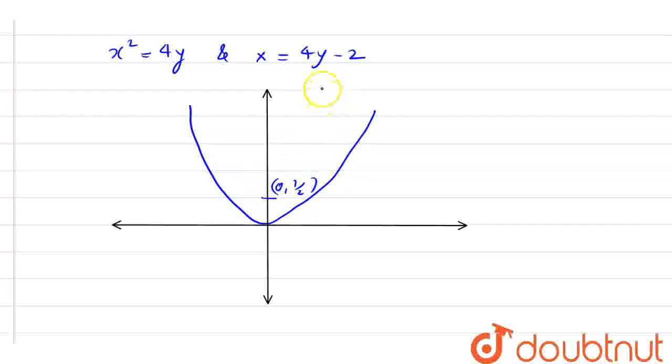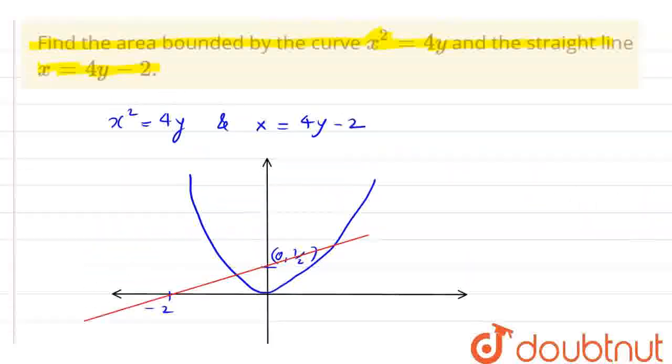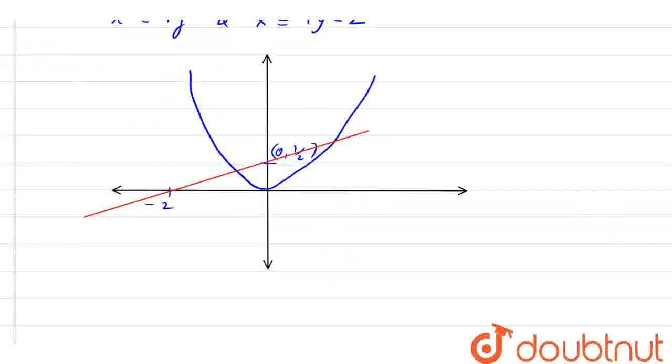Now, if I put value of y 0 here, then the value of x is minus 2. If I draw this line connecting these two points, something like this, then I have to find the area bounded by this curve. So we need to find this area.